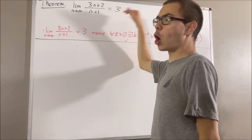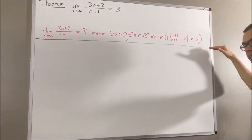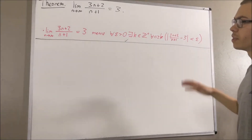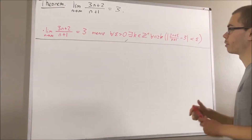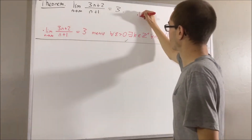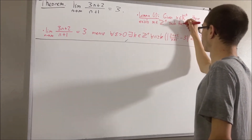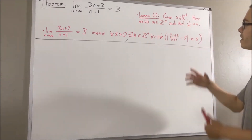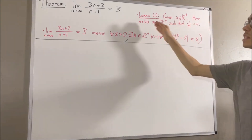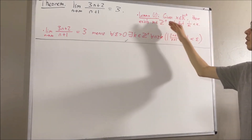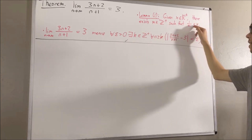So to prove this, all we got to do is prove this. In the proof, we are going to use the following preliminary result: given any positive real number x, there exists a positive integer m which satisfies 1 over m is less than x.